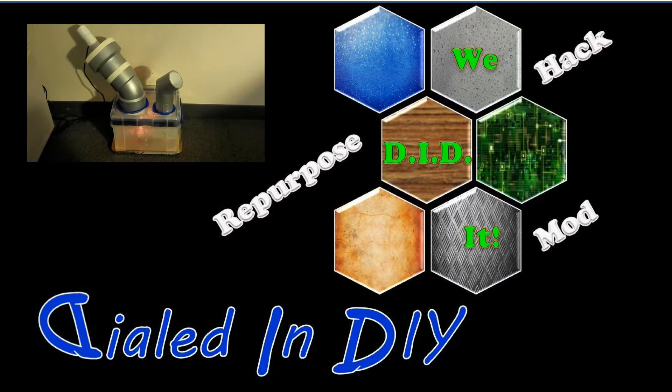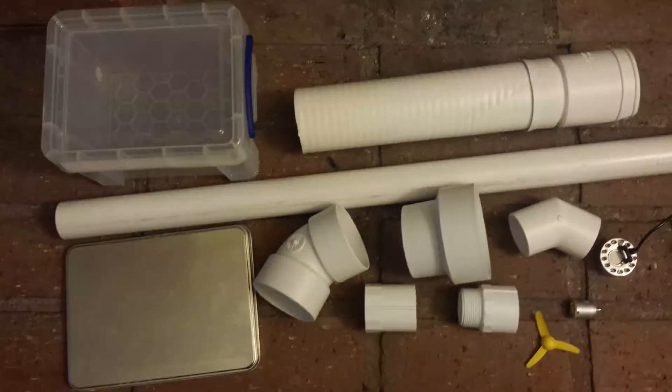The essential items include a plastic box to contain everything, some PVC parts and PVC pipe, drain pipe, a small fan, and a water fountain fogger that I actually found online for a very good price.